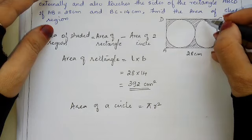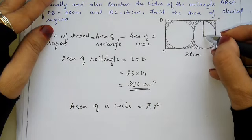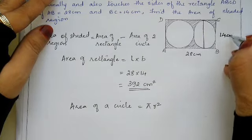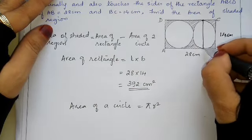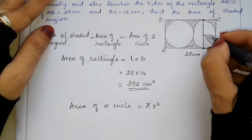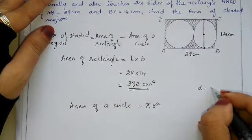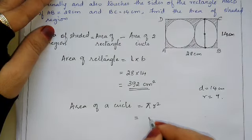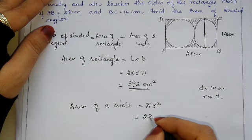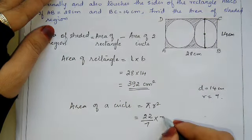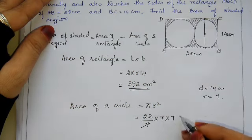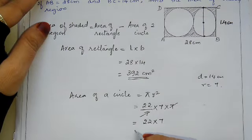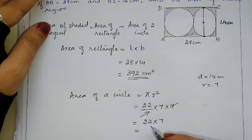Area of circle equals pi r square. We don't have r directly, but we can see that the diameter of the circle is 14 cm, so radius is half of 14, which is 7. Therefore area of circle equals 22/7 into 7 squared. The 7s cancel giving 22 into 7, which is 154 cm square.